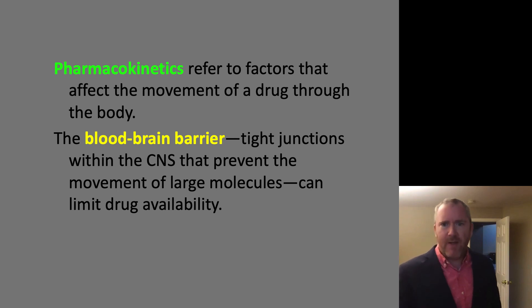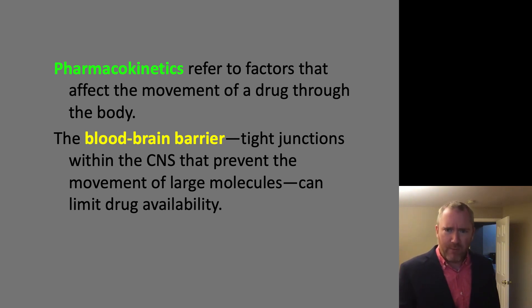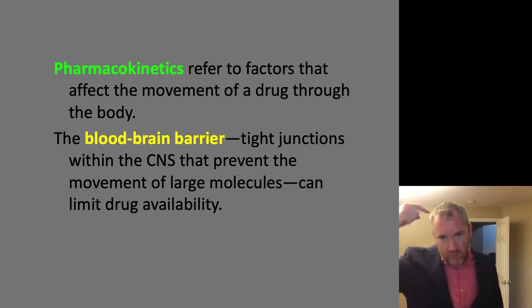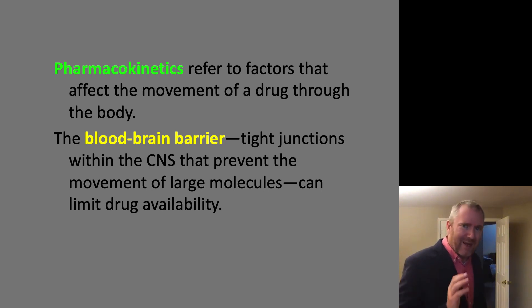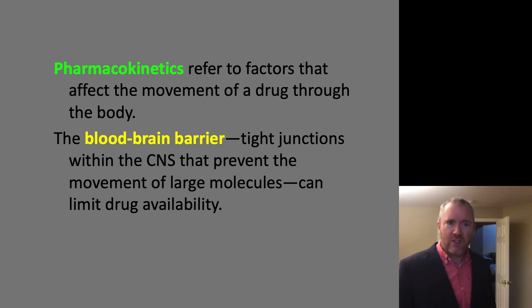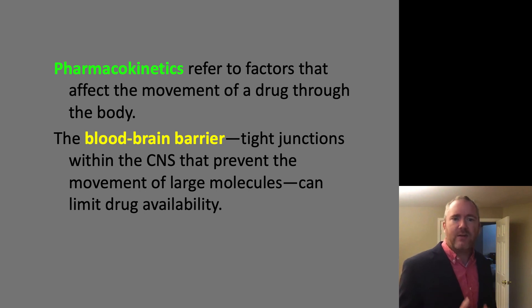There are many drugs out there that could be quite effective at treating a variety of psychiatric disorders, but they don't pass the blood-brain barrier. In rat studies, we can drill holes and inject directly, but in humans, what do you do? The blood-brain barrier is formed of tight junctions within the central nervous system that prevent the movement of large molecules like drugs, which can drastically limit drug availability in the brain even if you see it in the blood.